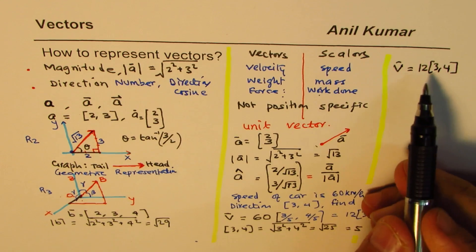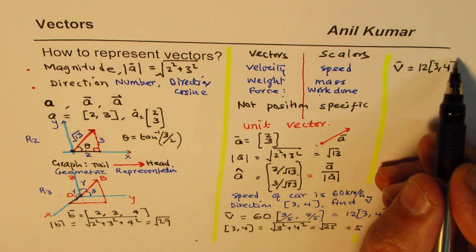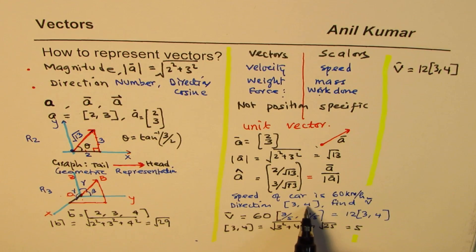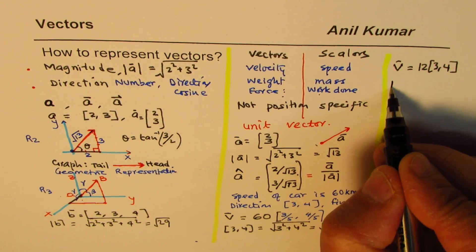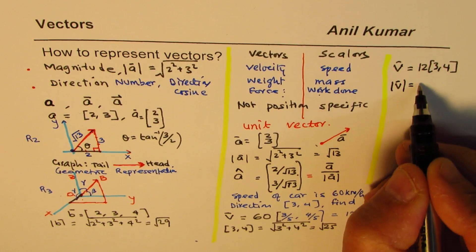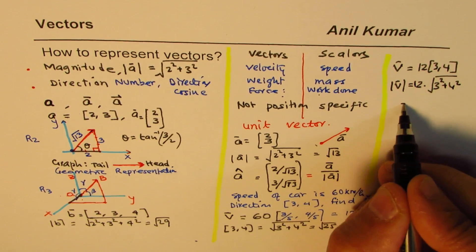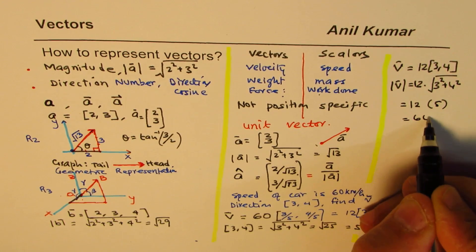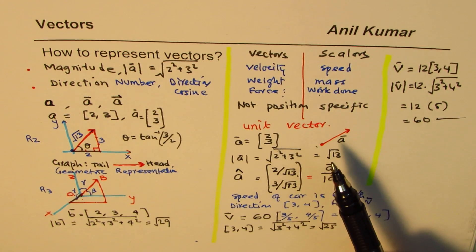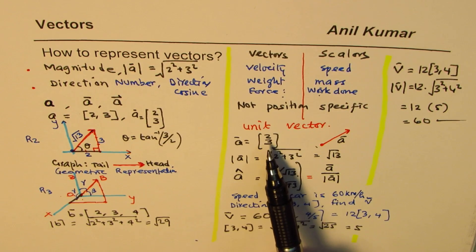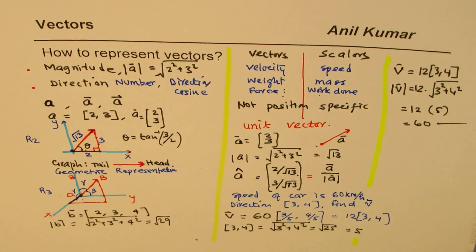So we write the velocity as 12 times (3, 4). The direction (3, 4) is correct and the magnitude is 60. What we've seen is that you find the unit vector from the direction vector — the direction vector may have its own magnitude. Vectors have magnitude and direction; scalars do not have direction.